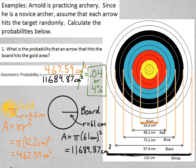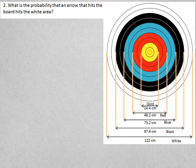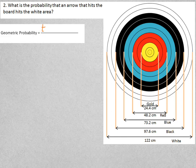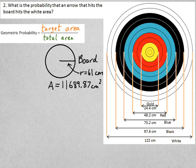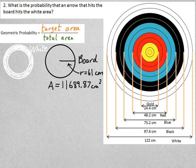So let's try another one, just to help you guys get it. Let's find the probability that an arrow hits the white area. Our formula is still the same, target area over total area. And the board is still the same. It still has an area around 11,689. What's changed? The target area has changed. Instead of being the gold circle, we want to find the white region. That's our target area. So I need the area of that white ring.